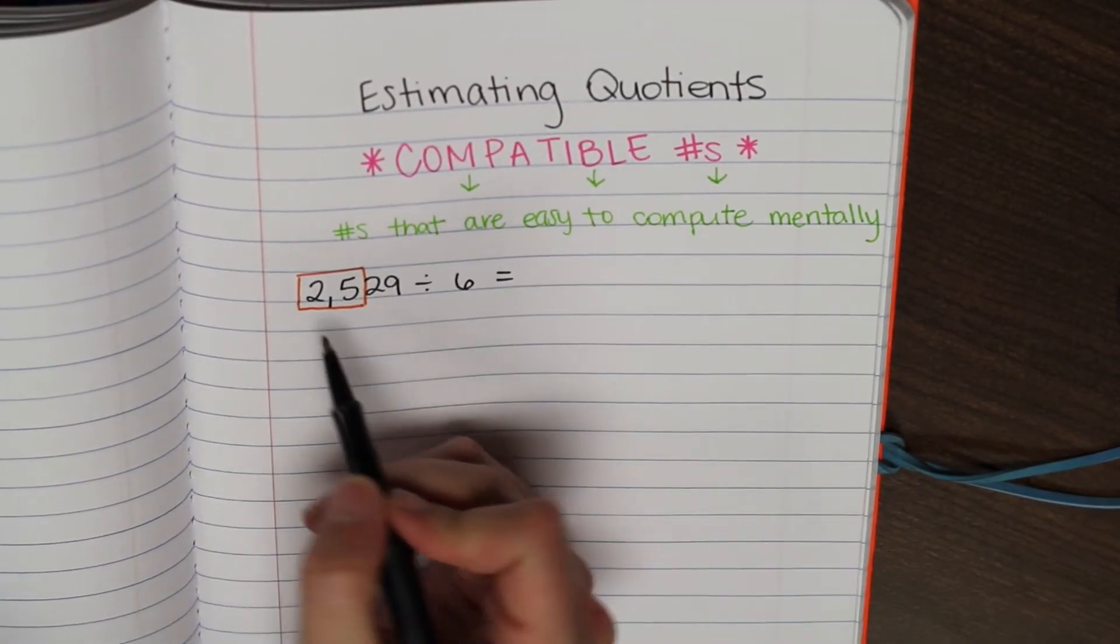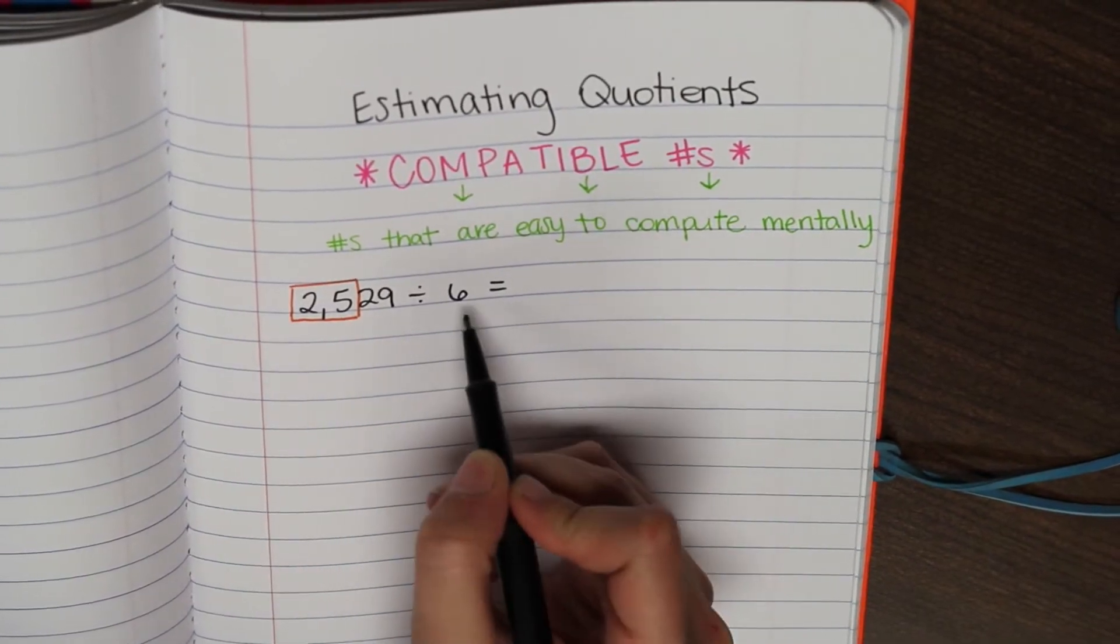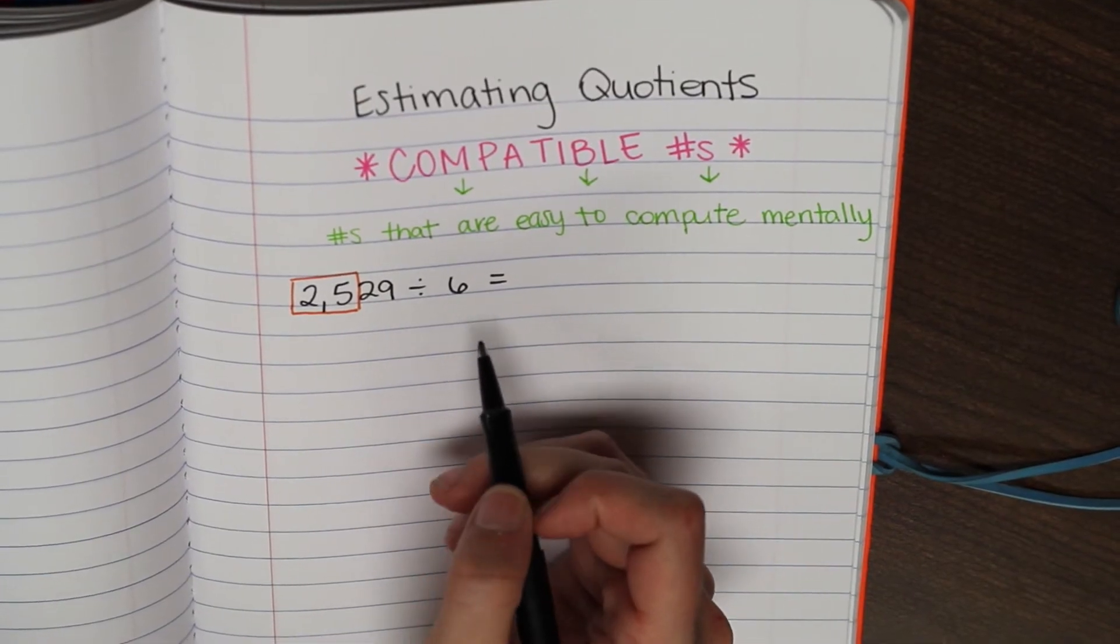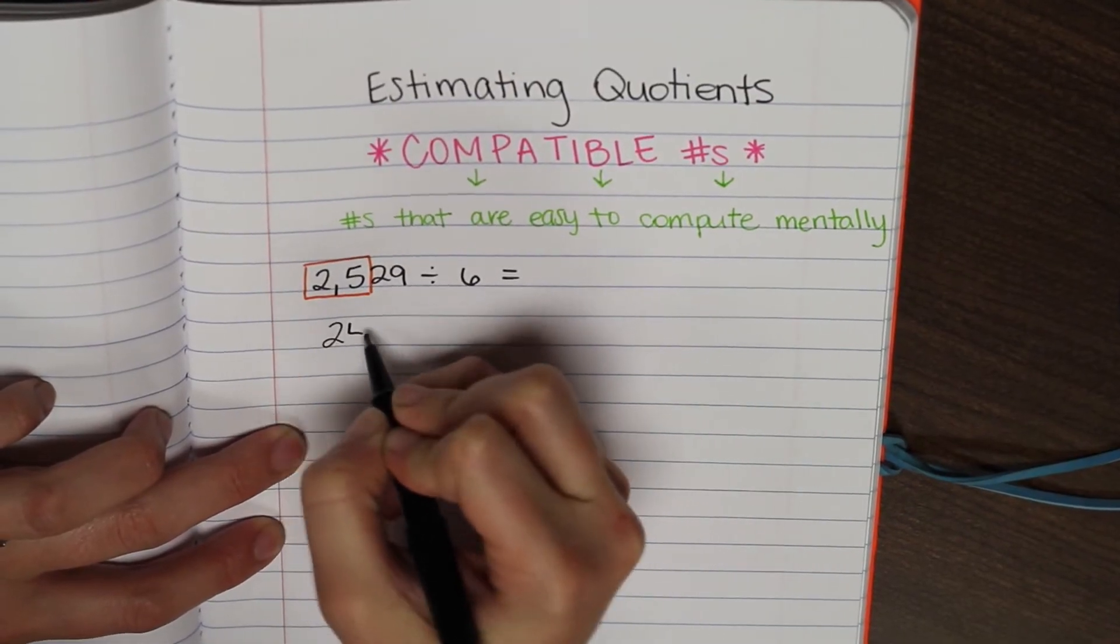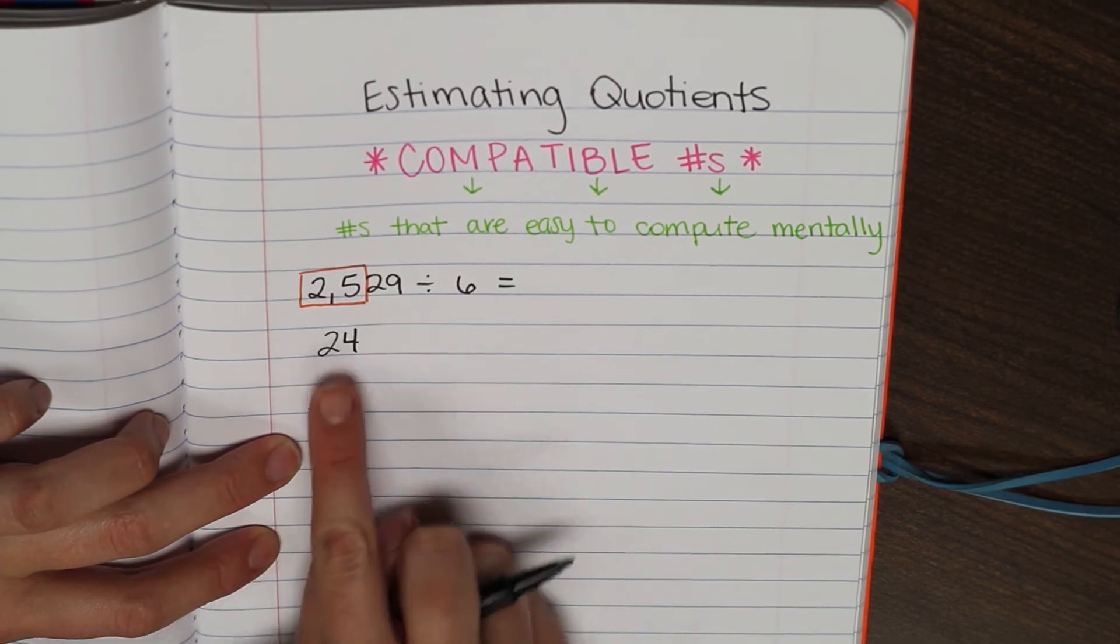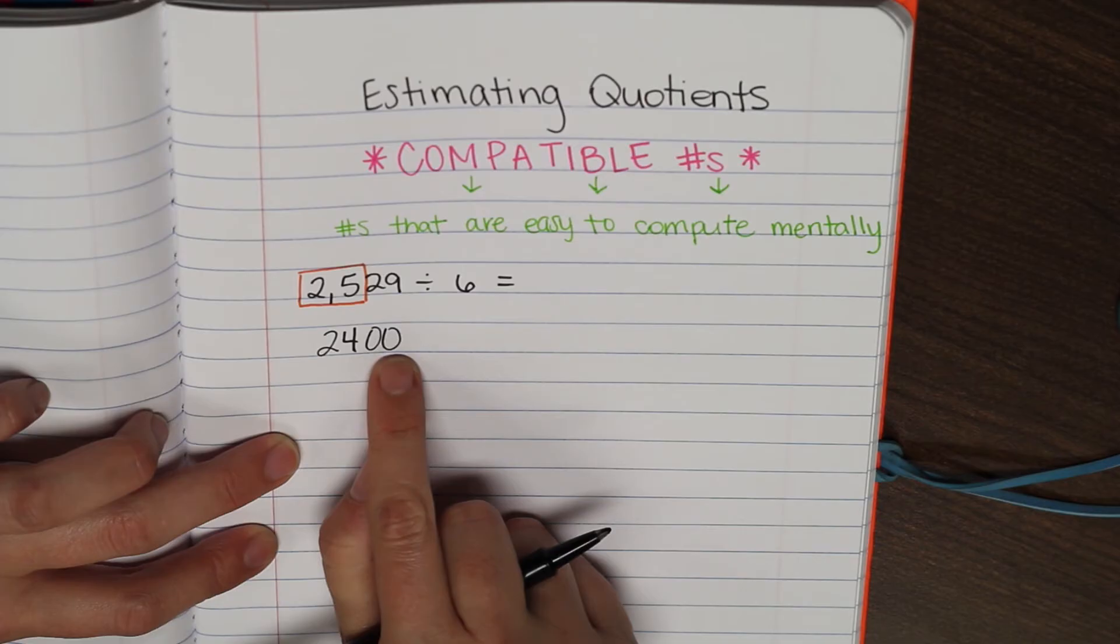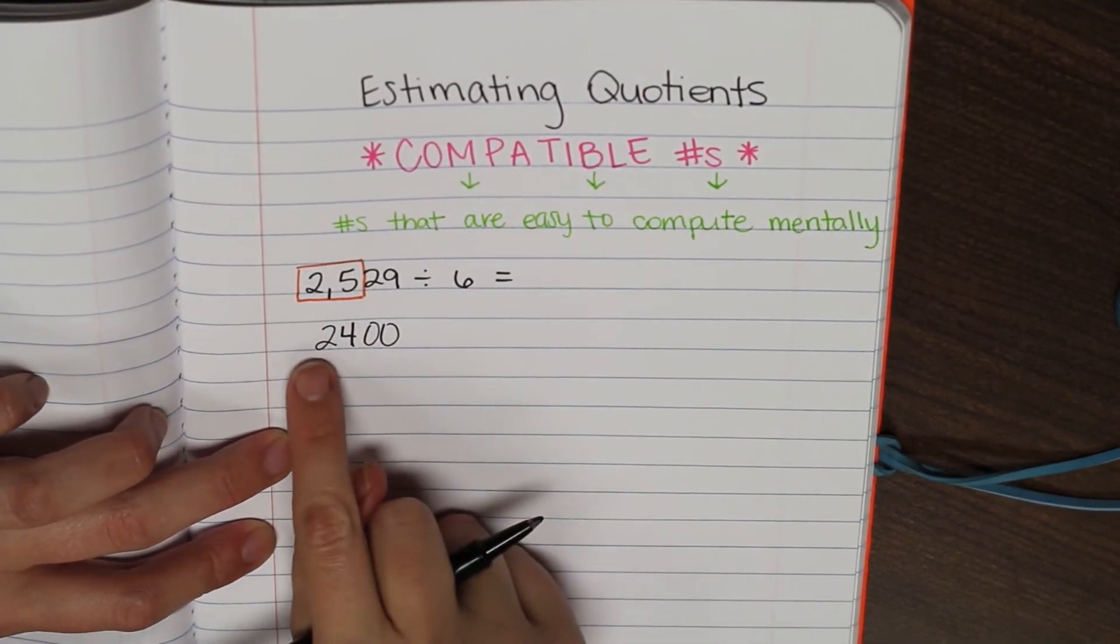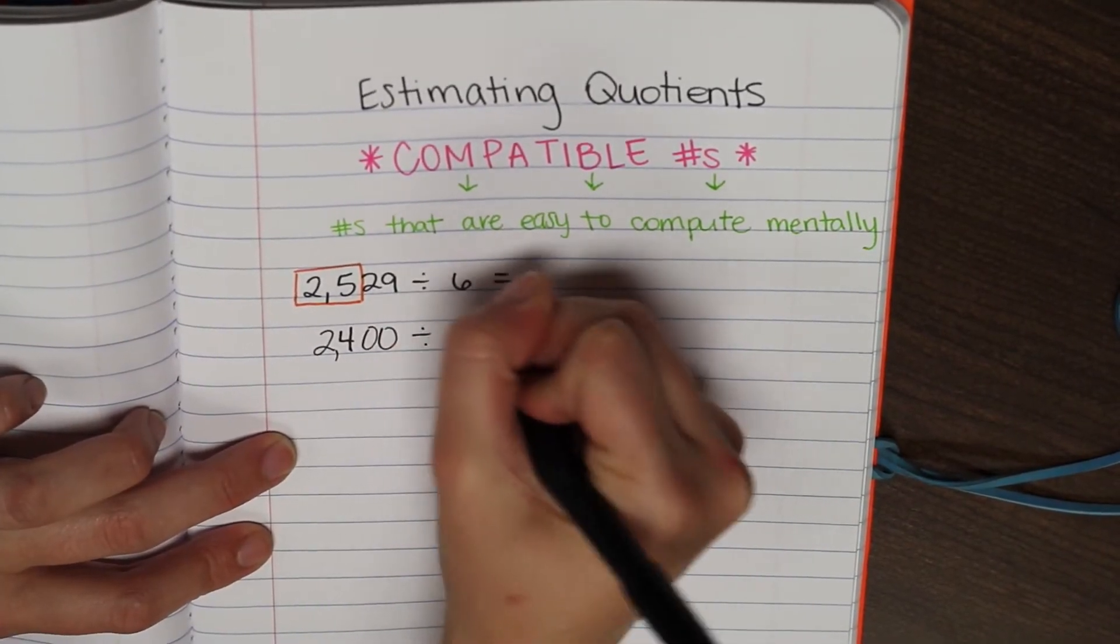And we're going to think about what is a number that is close to 25 that would be compatible with 6. So think about your multiples of 6. And the number 24 might come to your head first. So we're going to take the number 24. It's close to 25. And then we're going to add two zeros behind it. So we're rounding 2,529 to 2,400. So then we're going to divide that by 6.